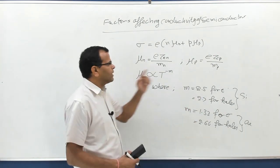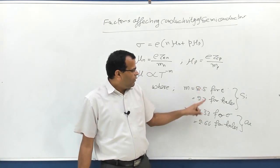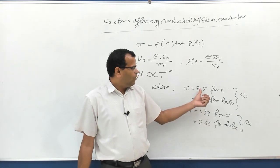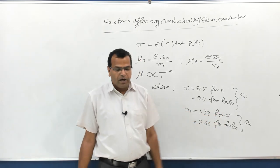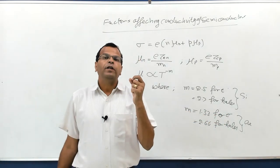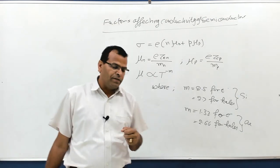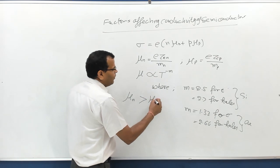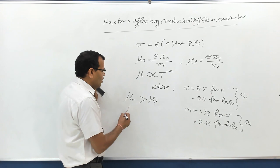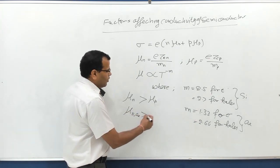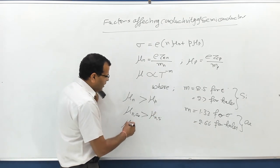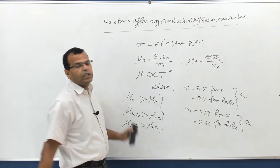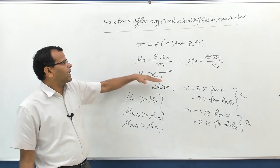The value of M for silicon and germanium differs — for silicon it is 1.33 for electrons. Mobility of charge carriers depends on the type of material and the type of charge carrier. So: mobility of electrons is greater than the mobility of holes; mobility of electrons in germanium is greater than in silicon; and mobility of holes in germanium is greater than in silicon. These can be objective-type exam questions. This covers the variation in mobility with respect to temperature — the first factor.